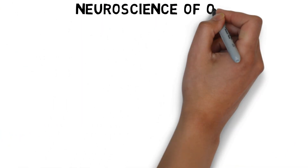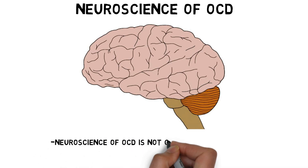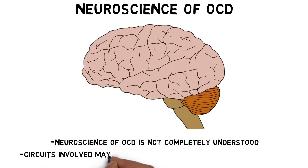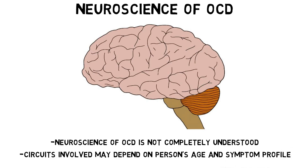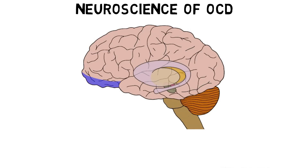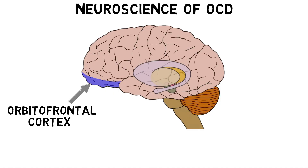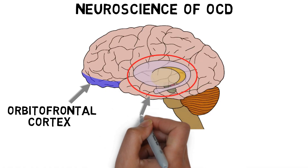The neuroscience of OCD is not completely understood, and it's likely that different neural circuits may be involved based on a person's age and symptom profile, among other factors. One supported perspective on the neuroscience of OCD points to a prominent role for circuits that connect the orbitofrontal cortex with a group of structures called the basal ganglia.